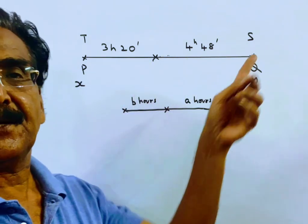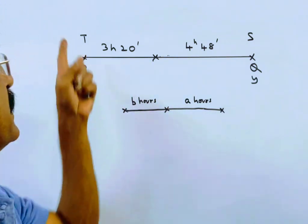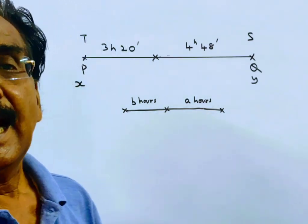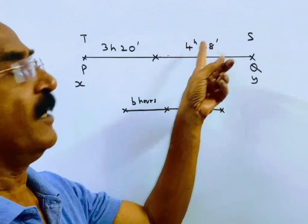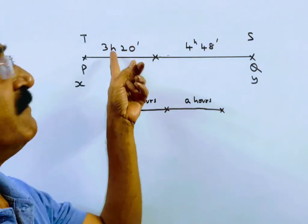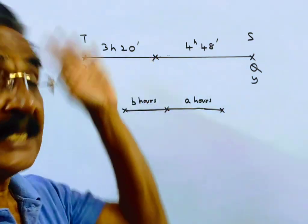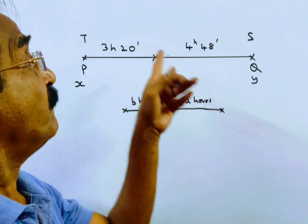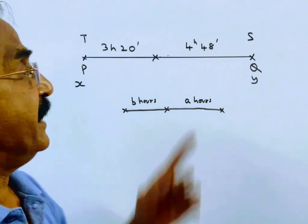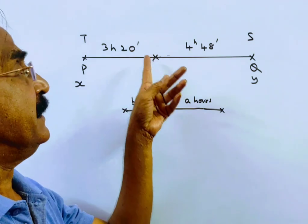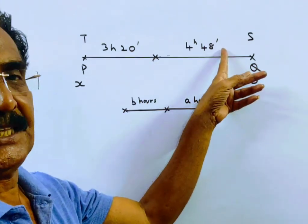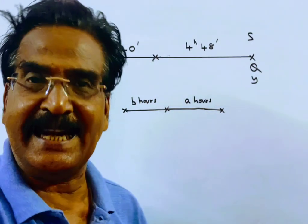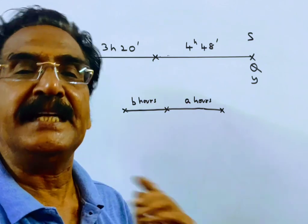Two trains P and Q start from stations T and S towards each other and they take 4 hours 48 minutes and 3 hours 20 minutes to reach the destinations S and T respectively. After they meet, they take 4 hours 48 minutes and 3 hours 20 minutes to reach the other ends, that means to reach their destinations.